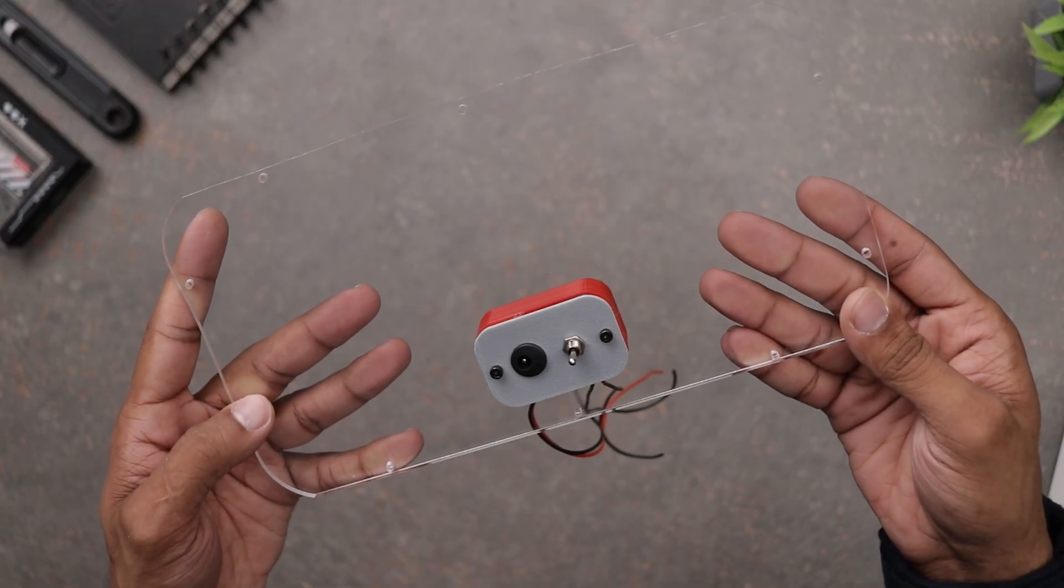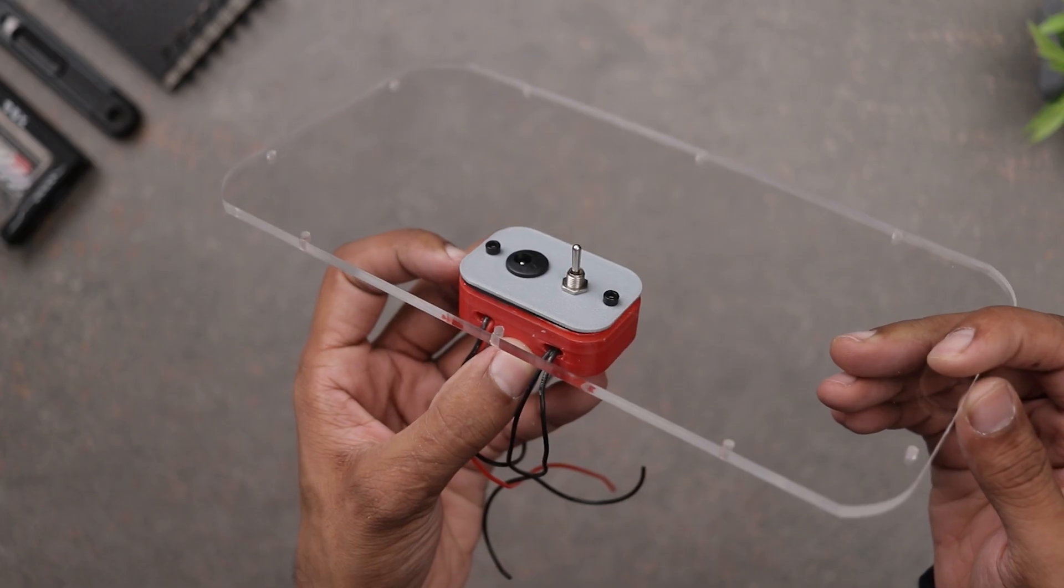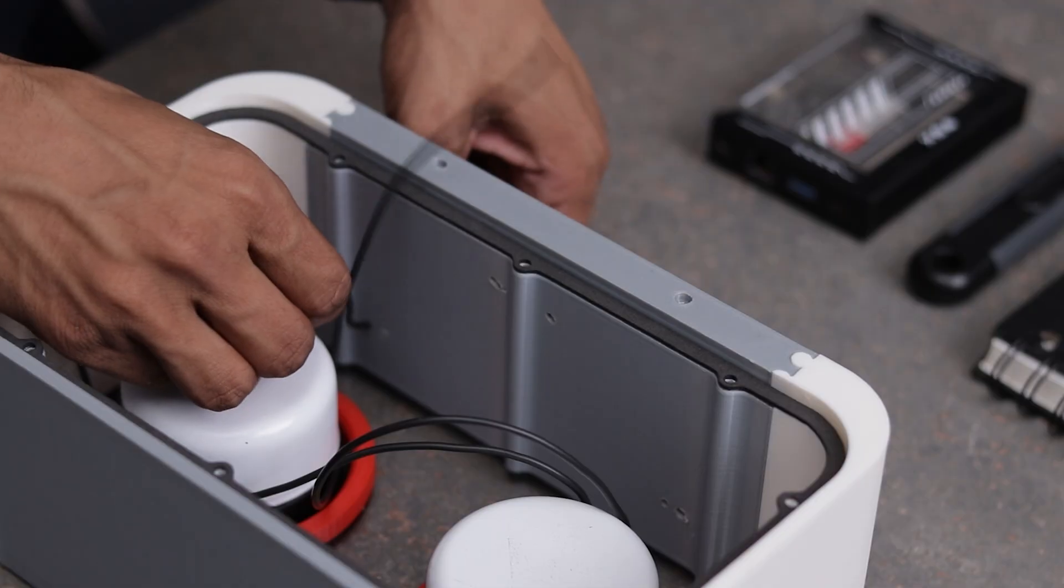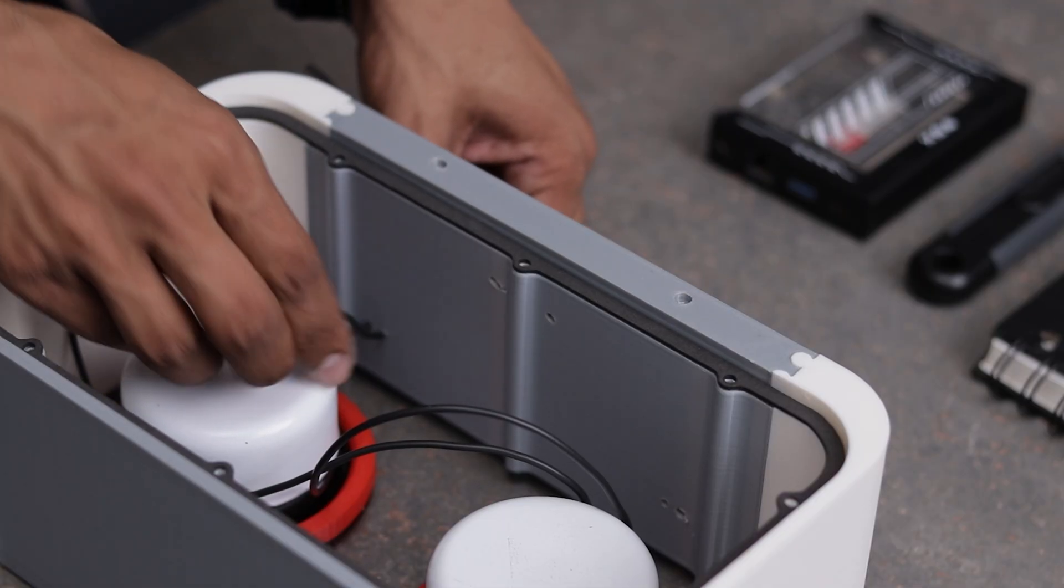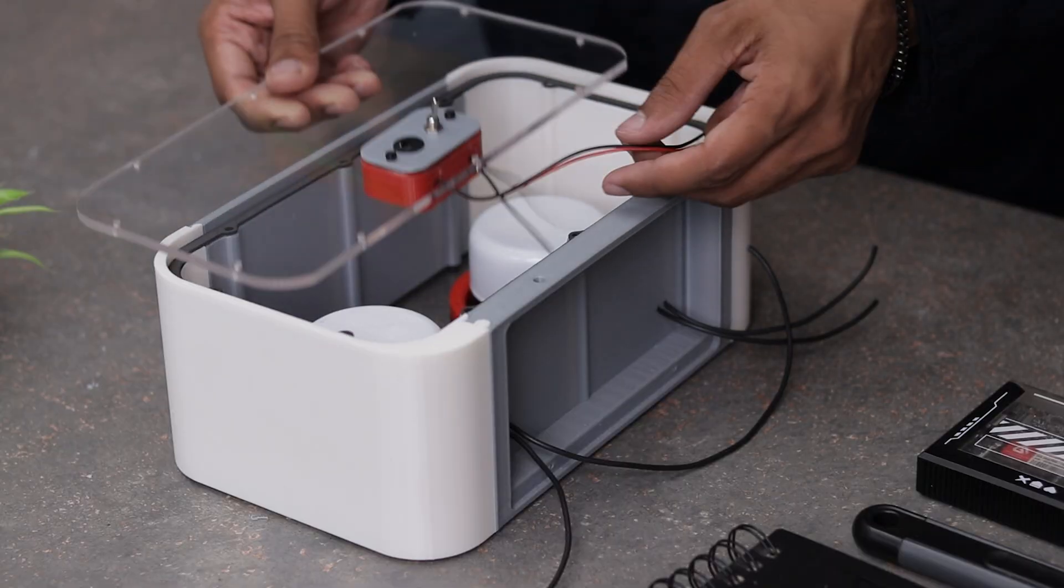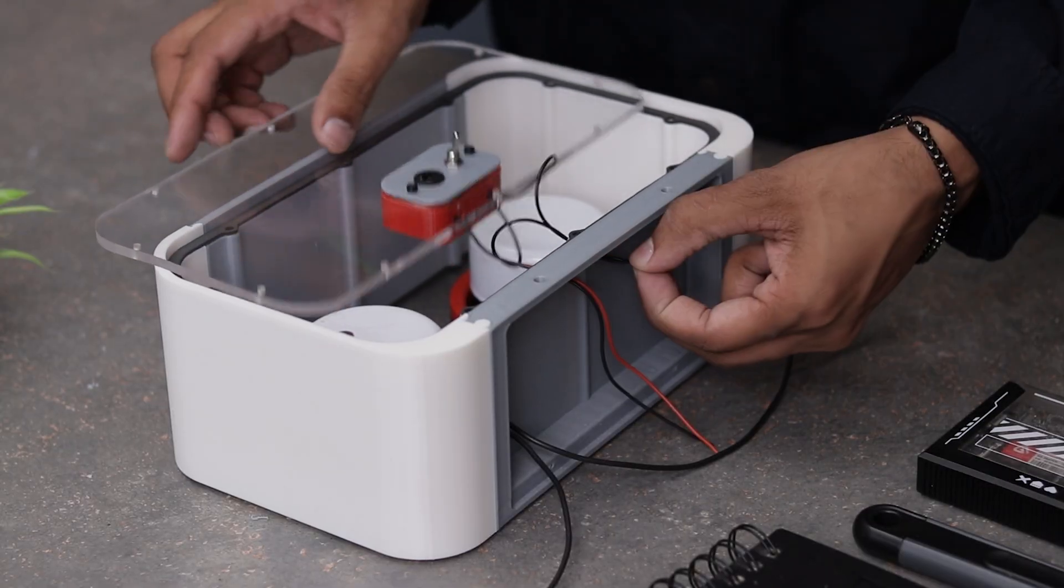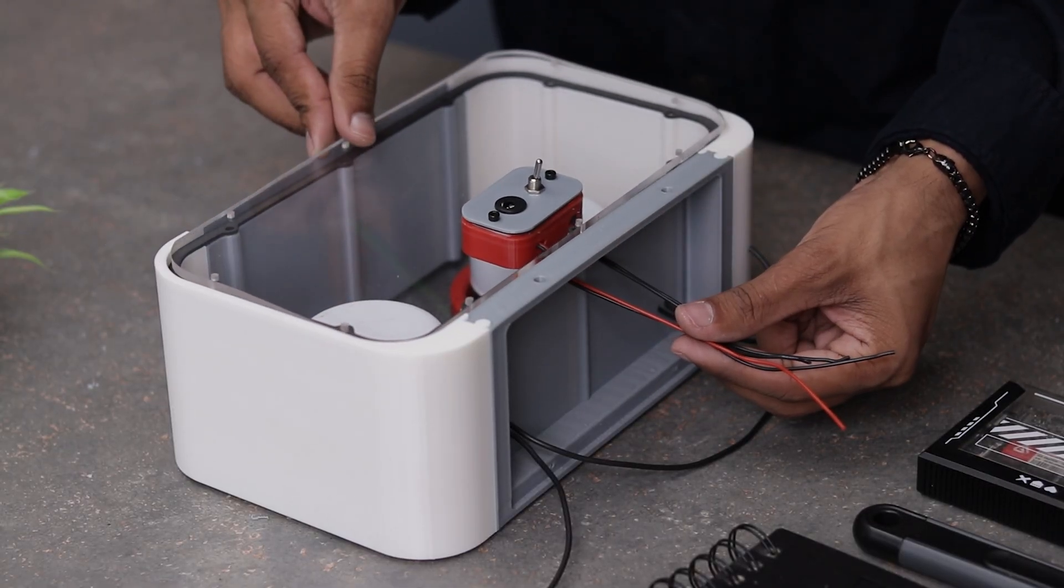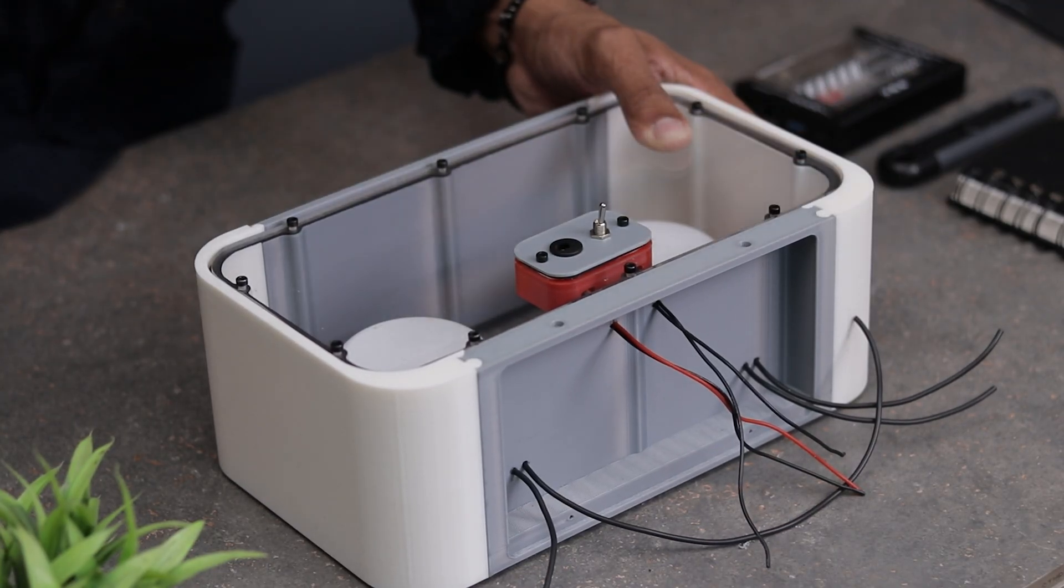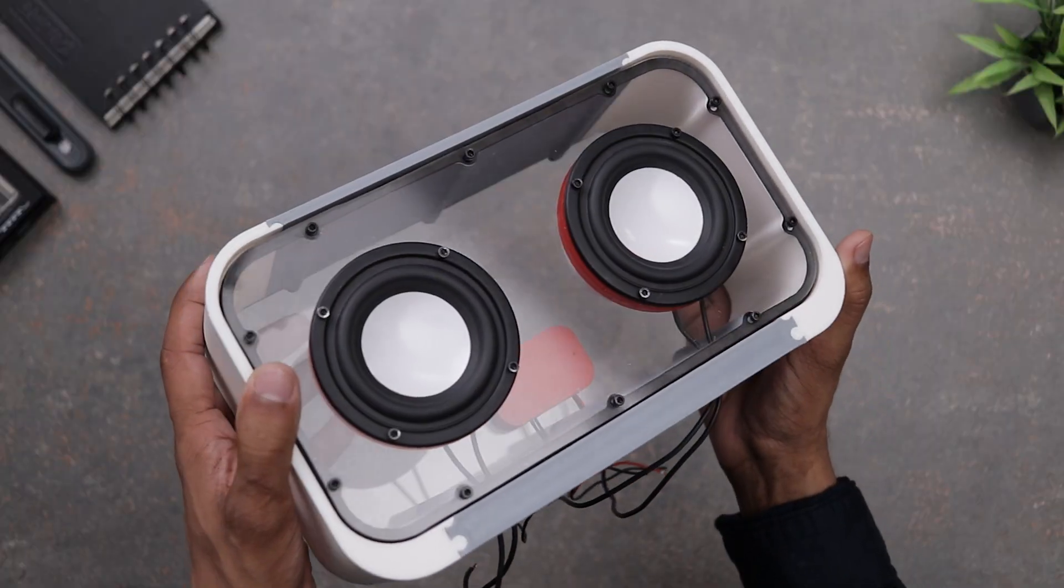Alright guys, the back panel is finally done and this is how it turned out. Before installing it onto the enclosure, we need to route all the wires through the bottom and then secure the panel. Now that the back panel is installed, it's time for the electronics.